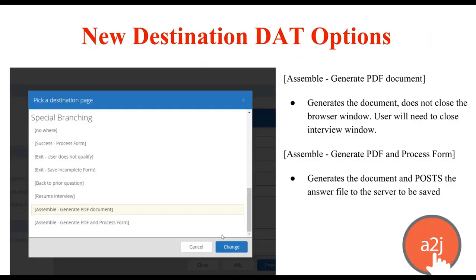What is the same for both is that each requires a new destination. The new destination DAT options are: assemble generate PDF document, and assemble generate PDF and process form. The first one, assemble generate PDF document, generates the document for the end user when they hit that final button, but it does not close the browser window. The user themselves will need to close the interview window in order to complete the interview.